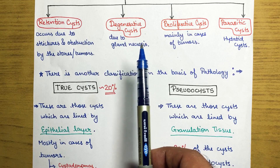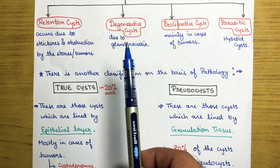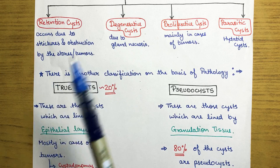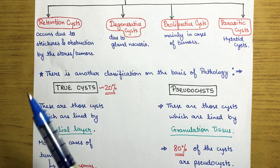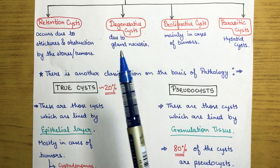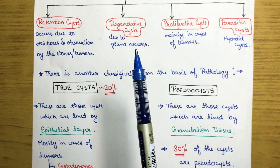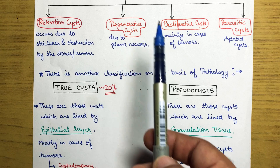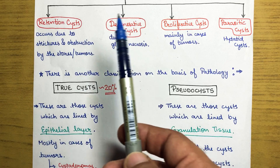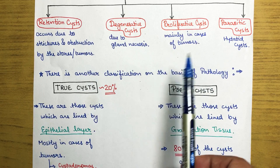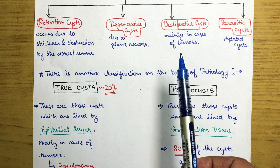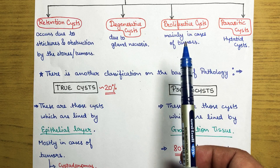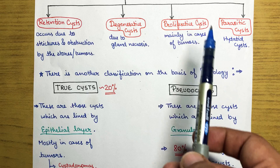The second type is degenerative cysts. In cases of chronic or acute pancreatitis, inflammation of the pancreas can lead to gland necrosis in later stages, forming degenerative cysts. The third type is proliferative cysts, which mainly occur in cases of tumors.